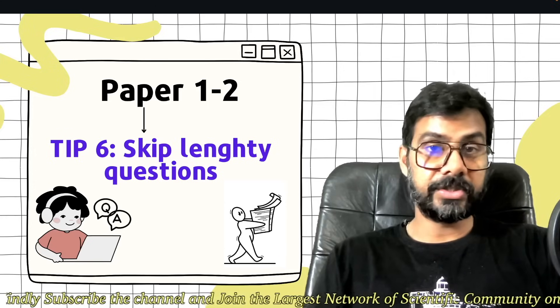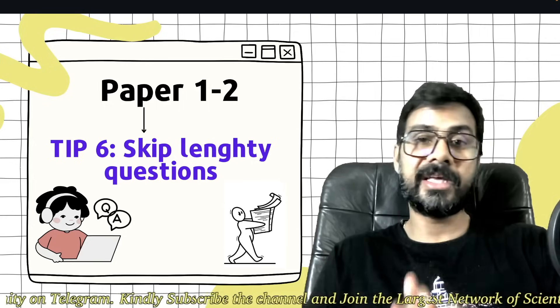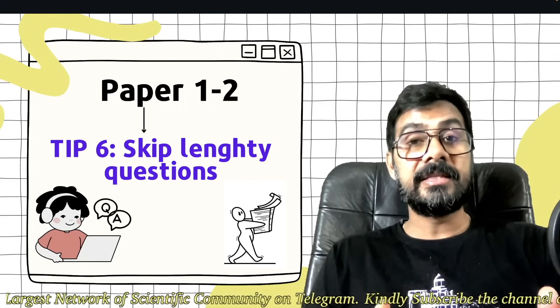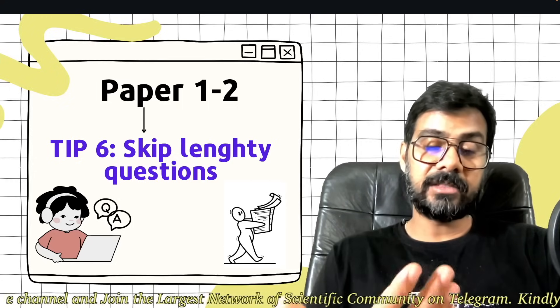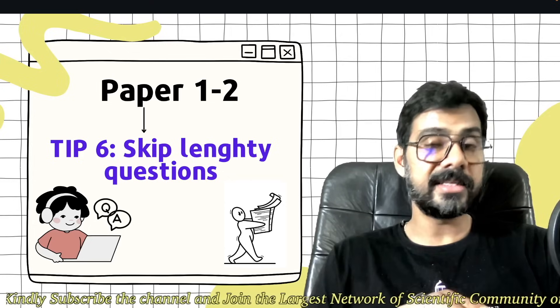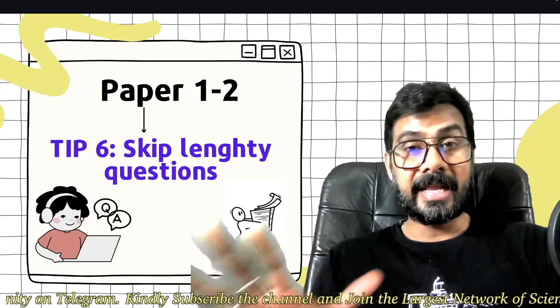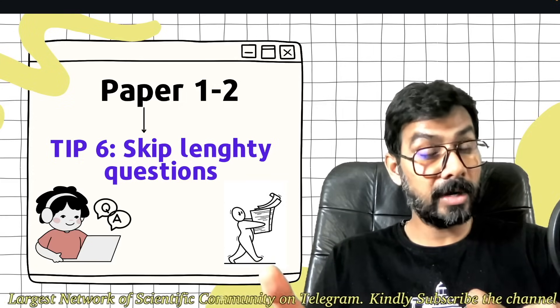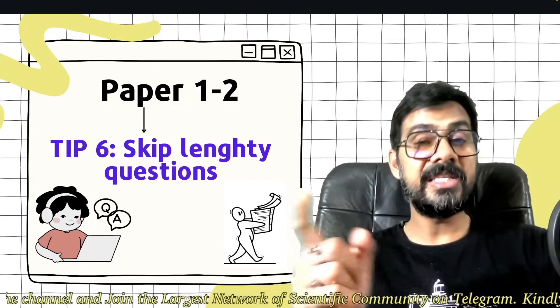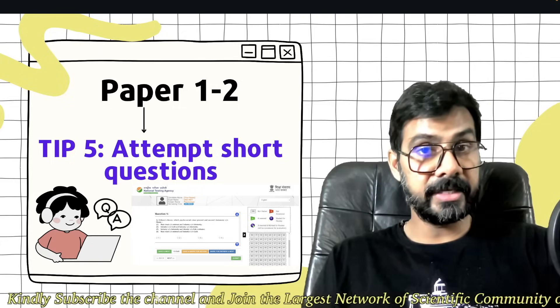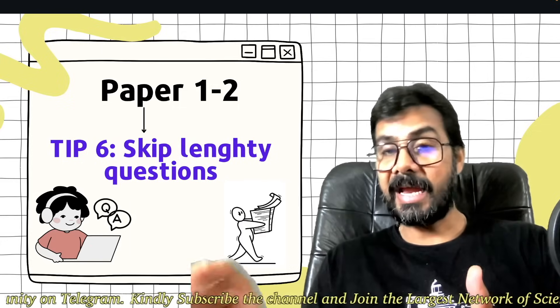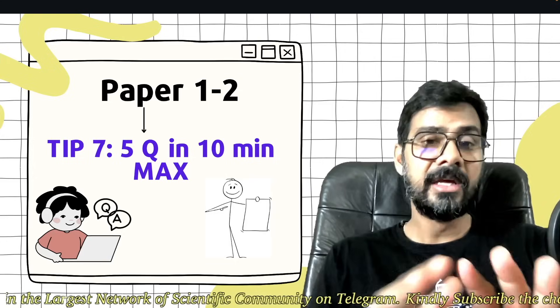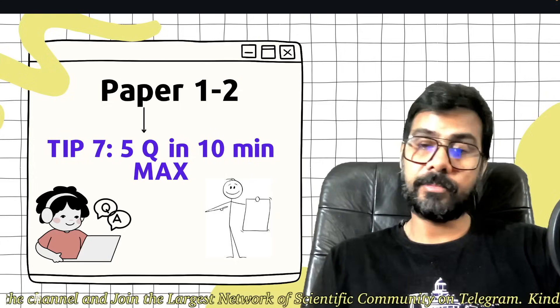Tip 6: Skip lengthy questions. When you read lengthy questions, you will not understand what they want to ask. Those lengthy questions will take three times more to read - first attempt, second, third, and the fourth attempt you'll finally know what they're asking. If this is happening, you are leaving next five short questions which you're 101% sure about. So please make sure, attempt short questions first, skip all lengthy questions for the end. If time remains, then only attempt.